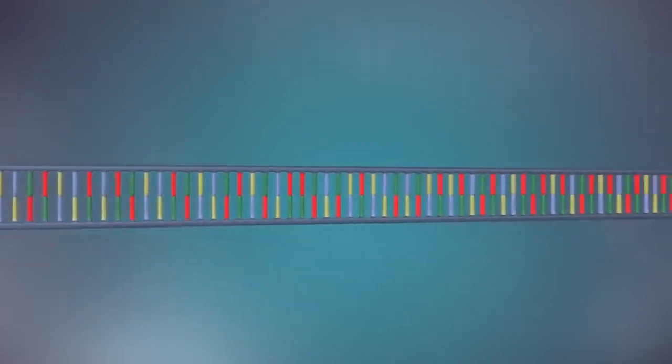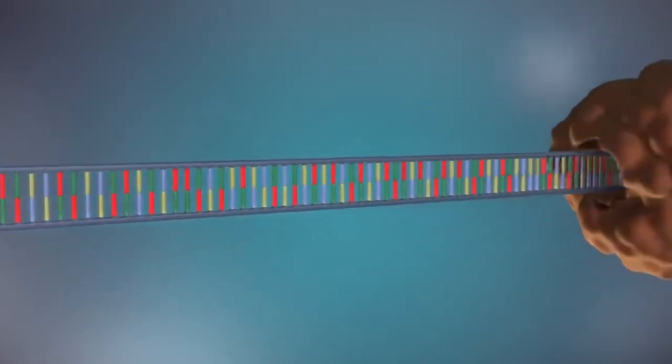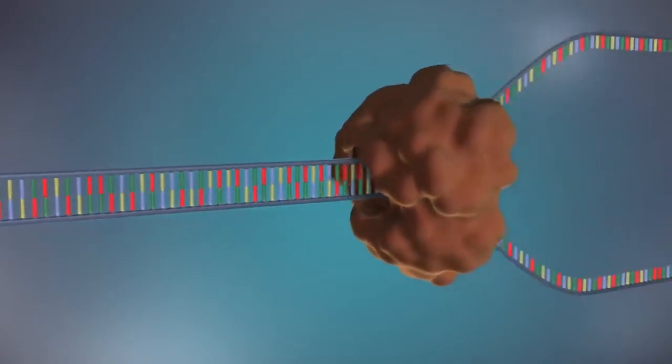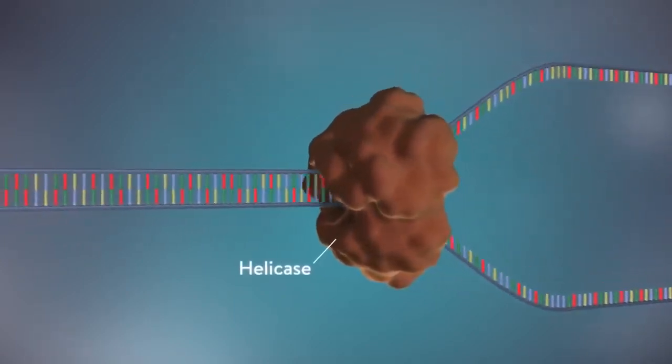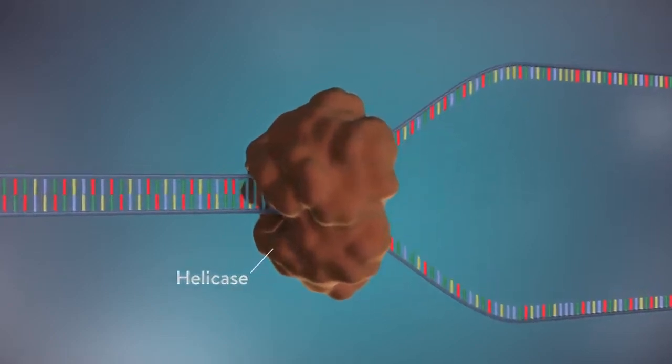The first step in DNA replication is to separate the two strands. This unzipping is done by an enzyme called helicase and results in the formation of a replication fork.